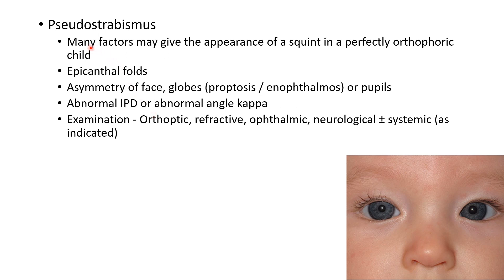Conversely, there is an entity called pseudo-strabismus. Many factors may give the appearance of a squint in a perfectly orthophoric child. This picture shows a case of pseudo-strabismus. If you notice, the eyes may seem misaligned, but the Hirschberg test is normal. The causes of pseudo-strabismus include epicanthal folds, asymmetry of face, globes, or pupils.